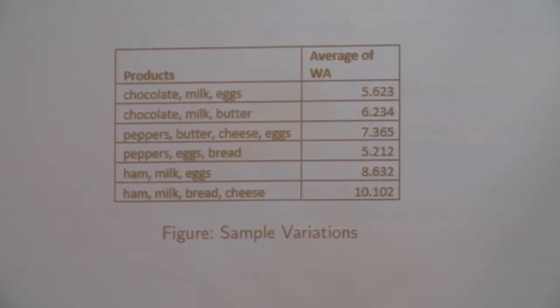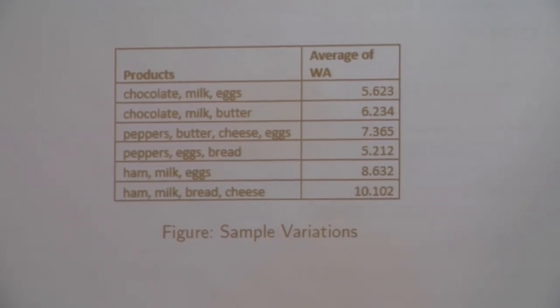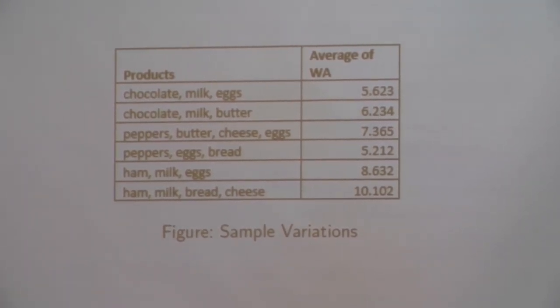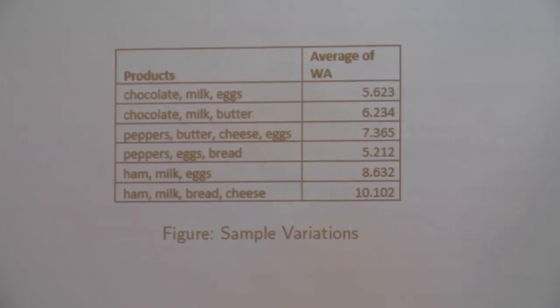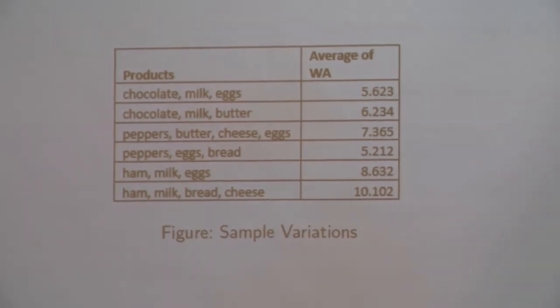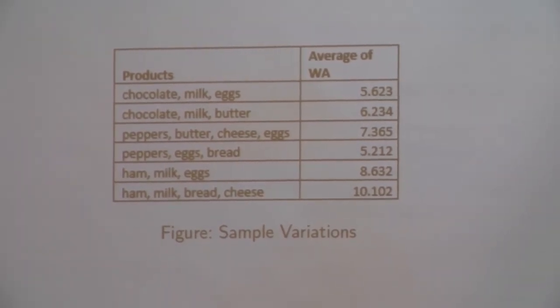And what we saw was two different types of products. One product was a unique product. So the chocolate, peppers, and ham, you can see they're only in their separate subgroups. They're not mixed in. And then the other product is one that's across the board. So if you see the eggs, the eggs are in all the subgroups. Not just a single one.